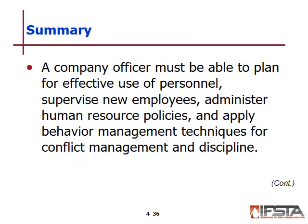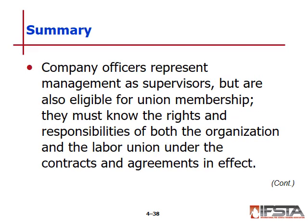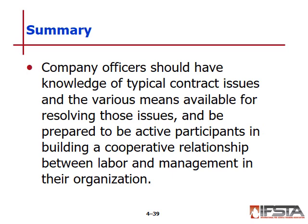To summarize this chapter: a company officer must be able to plan for effective use of personnel, supervise new employees, administer human resource policies, and apply behavioral management techniques for conflict management and discipline. Company officers need to know both HR policies and procedures as well as existing labor agreements. Company officers represent management as supervisors but are also eligible for union membership. They must know the rights and responsibilities of both the organization and the labor union, and be prepared to actively participate in building cooperative relationships between labor and management.